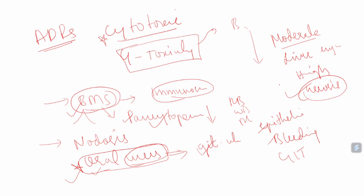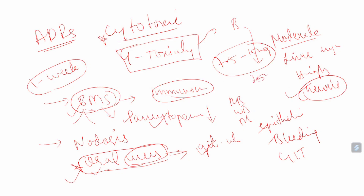Because of these adverse effects, methotrexate is always given once a week. The dose is approximately 7.5 to 25 mg. The minimum dose is 7.5 mg, and the common dose in our hospital is 7.5 mg once a week.